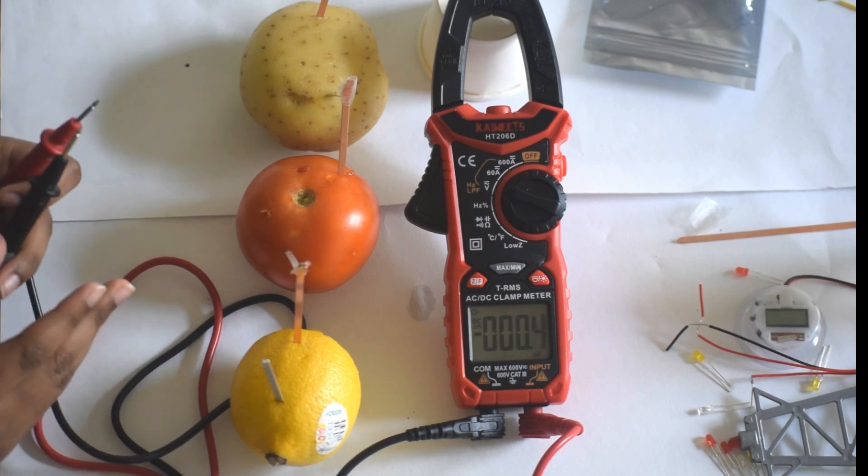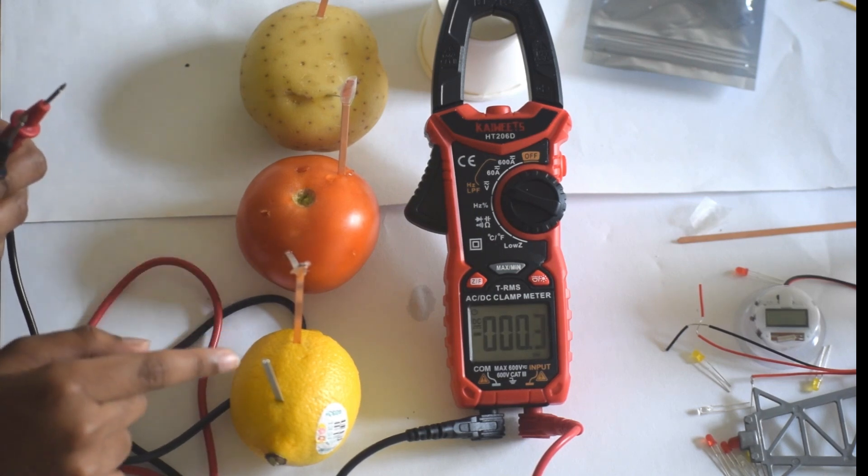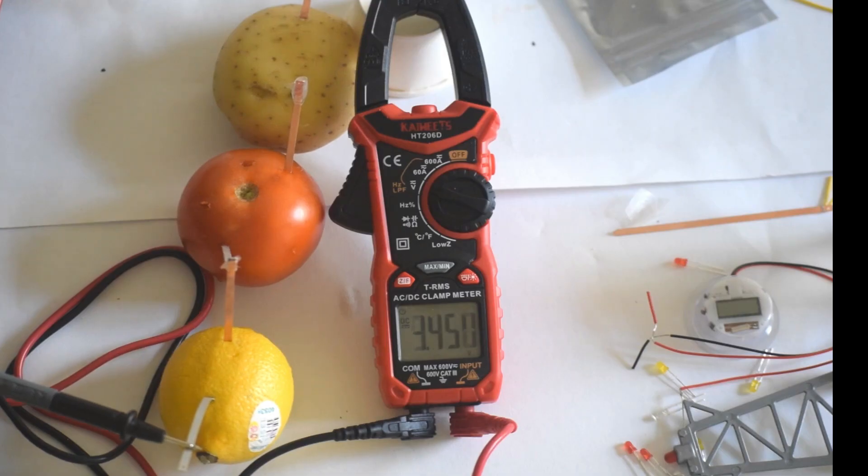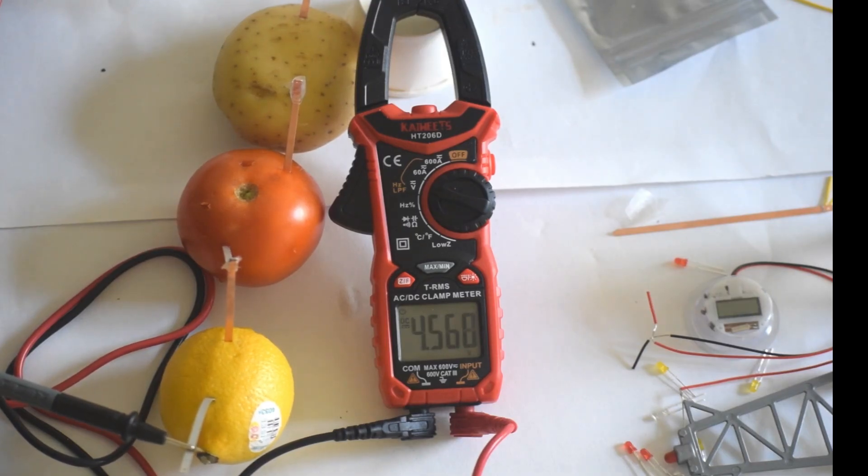Our next experiment is to combine all the cathodes and anodes together to see how much total electricity we can get. I've already done it. Let's see, it's around 4 volts. Wow, how's that?